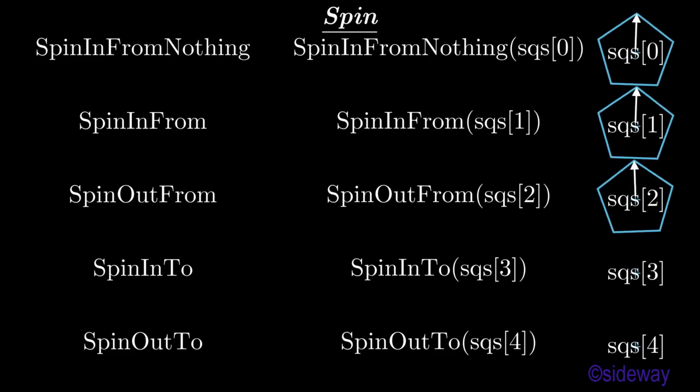SpinOutTo method is used to diminish a mathematical object at a point through a pi clockwise rotation animatedly.